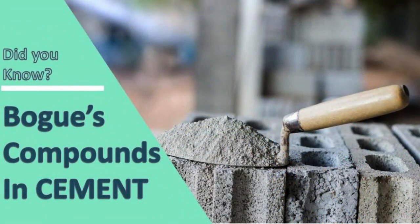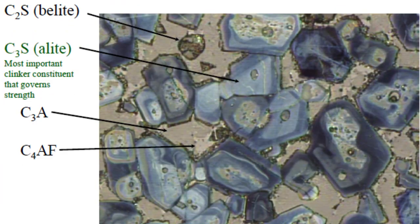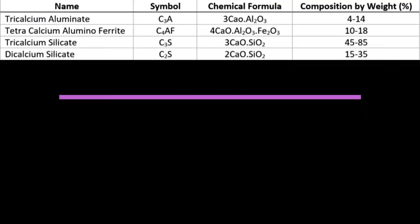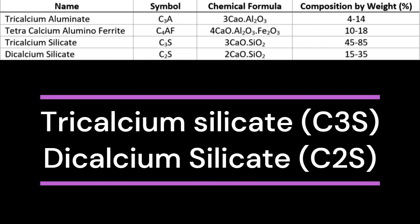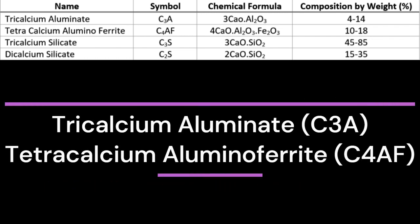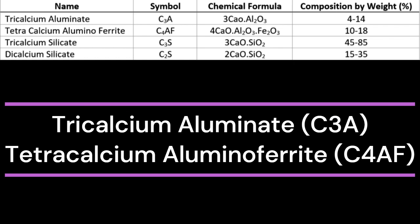Question 1: What are Bogue's compounds? Answer: The ingredients in concrete react with each other with the use of water and form more complex compounds. These compounds are called Bogue's compounds. There are mainly four types of compounds that originate at the time of the hydration of cement: tricalcium silicate (C3S), dicalcium silicate (C2S), tricalcium aluminate (C3A), and tetracalcium aluminoferrite (C4AF).